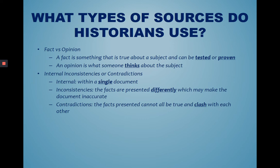Contradictions occur when the facts presented cannot be true and clash with each other. For example, at first he might tell you that they didn't have any food to eat, and then he might talk about the big meal that he ate on Sunday. Those facts don't match up — you can't have no food and then eat a big meal.